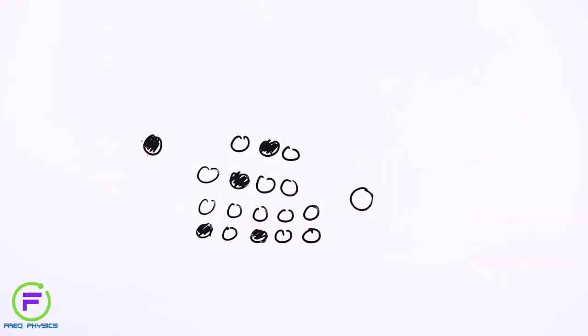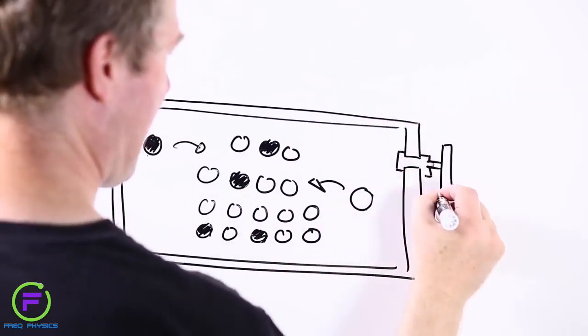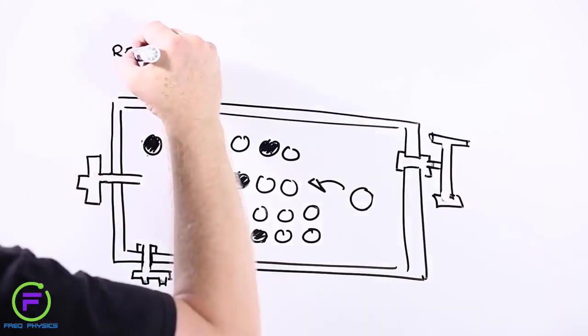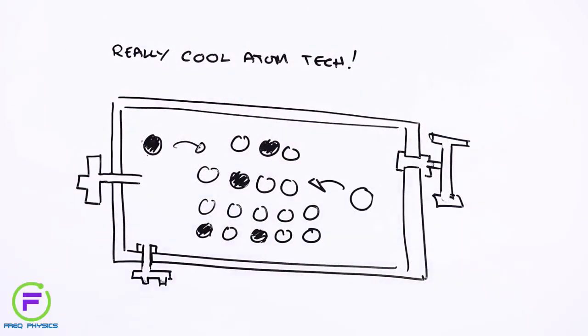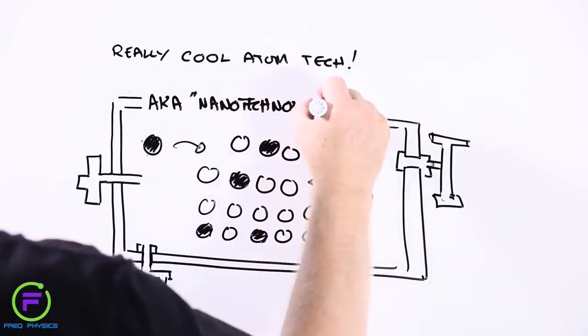But over the past few years, scientists and engineers have become increasingly good at designing and engineering materials down at the level of atoms or small groups of atoms. And because this new technology involved doing stuff at such a minute scale, it's called nanotechnology.